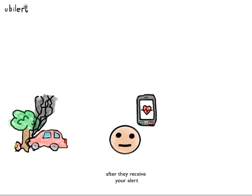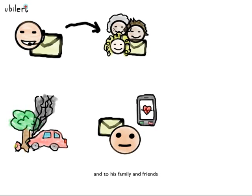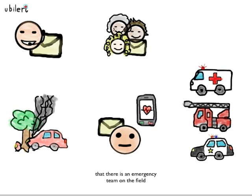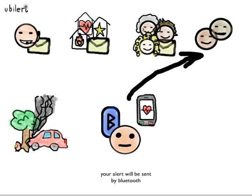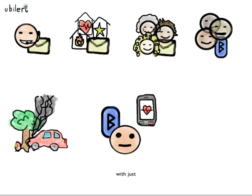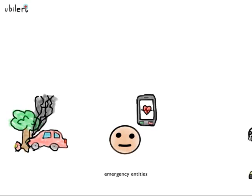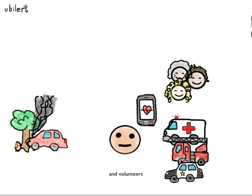After they receive your alert, the call center can give feedback to the victim and to his family and friends that there is an emergency team on the field. Additionally, with the UV Alert application, your alerts will be sent by Bluetooth to the volunteers that are around you.